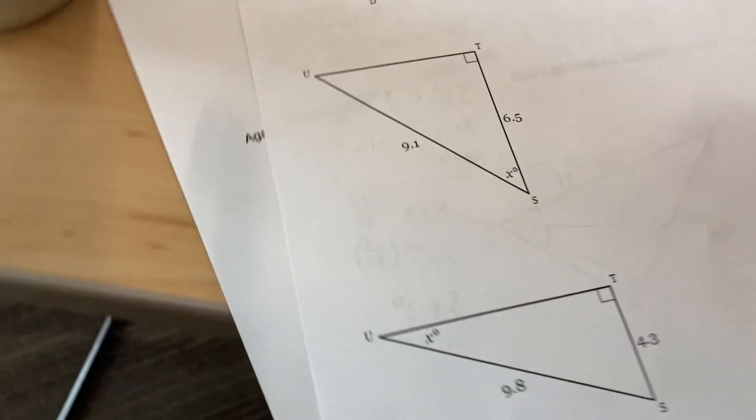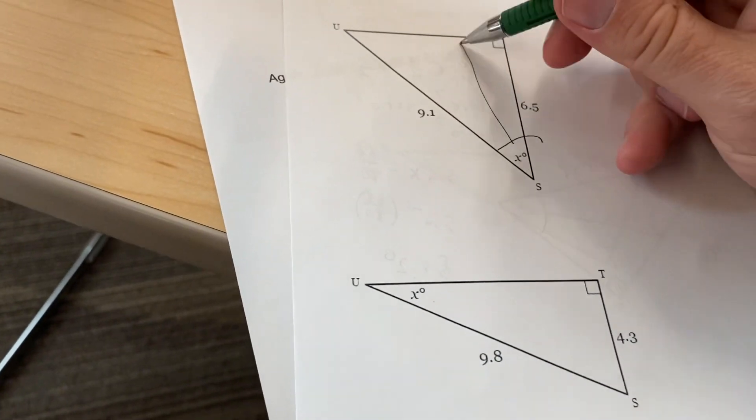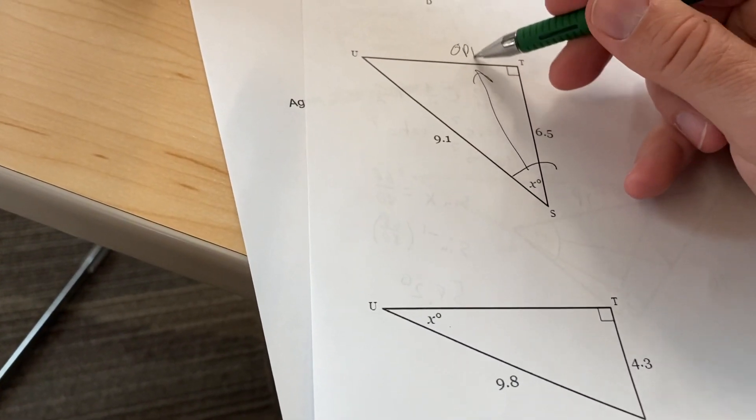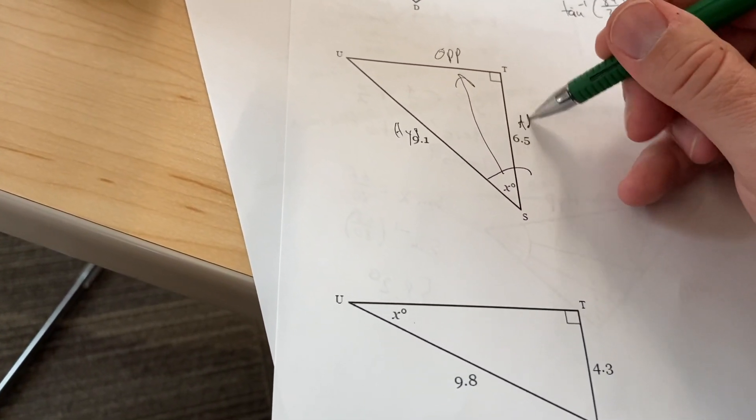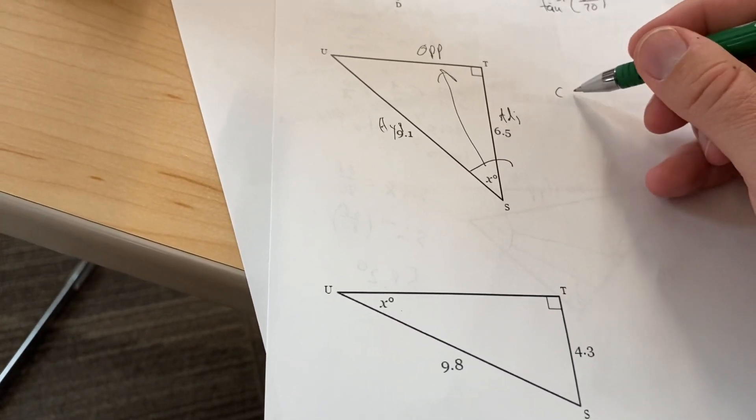Just to set that one up there. Again, on this one I don't have my opposite. I only have my hypotenuse and my adjacent. That means this is going to be cosine.